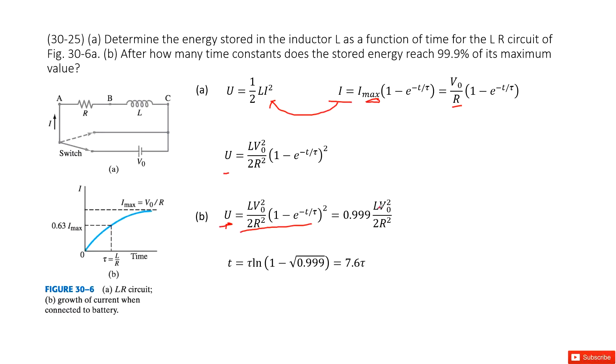So maximum u is LV0 squared divided by 2r. Now we get an equation like this one. To solve this equation, we get the function for t. We input to the calculation and we get the final answer is 7.6 tau. Thank you.